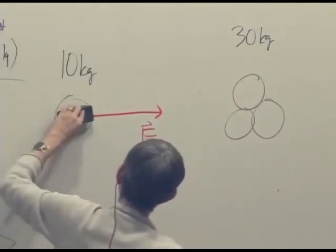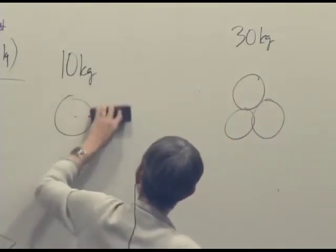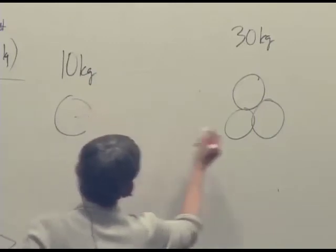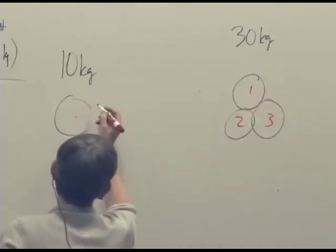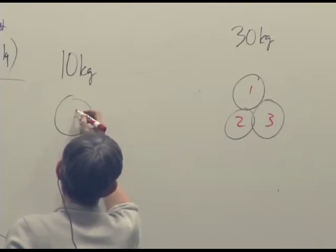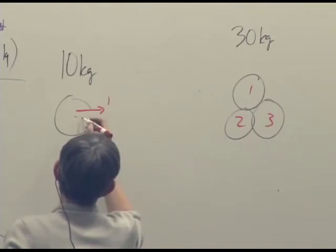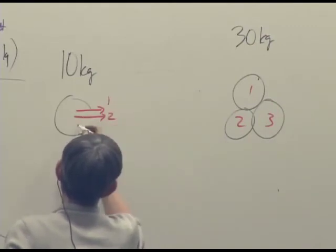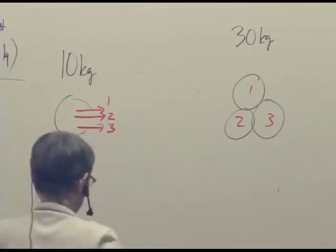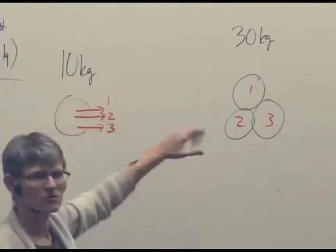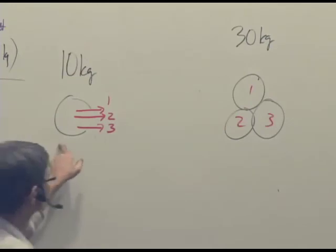So really we could write it as, if we call these one, two, and three, we could write it as the force exerted by one and the force exerted by two and the force exerted by three. So it's the sum of those three forces due to the three pieces that are acting on this.